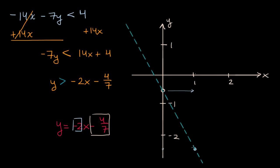So that would be the line y is equal to negative 2x minus 4 sevenths. But I dotted lined it because this isn't greater than or equal to. If it was greater than or equal to, I would fill it in. But it's greater than to show that we don't include the line, but we want all of the region, all of the area above the line.